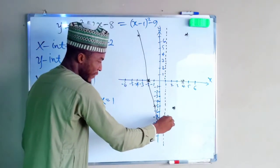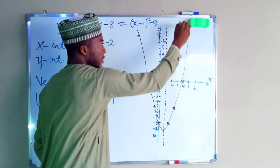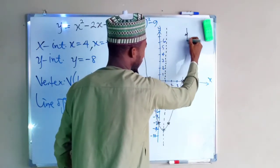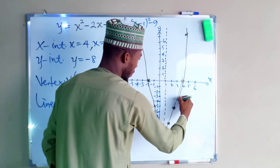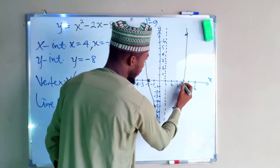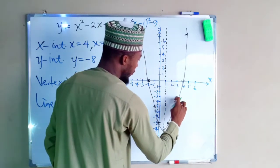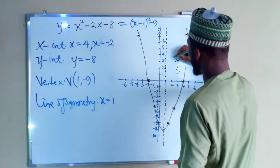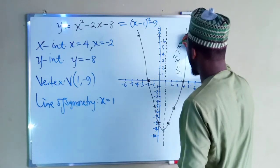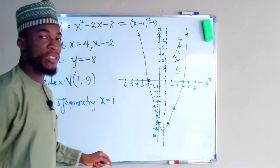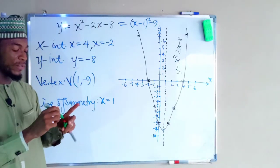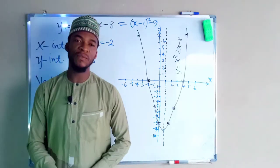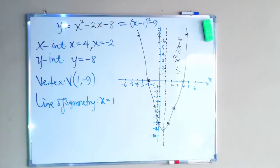My hand is not that perfect, and one point is out of range, but this curve is the graph of y equals x squared minus 2x minus 8. This is the simplest way to construct the graph of a quadratic function without constructing a table of values. If you enjoyed this video, kindly subscribe to my channel for more exciting videos. Thank you.